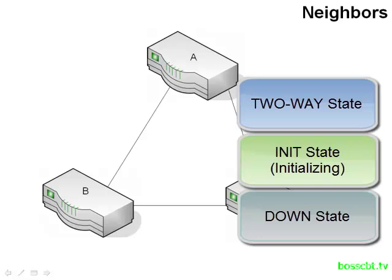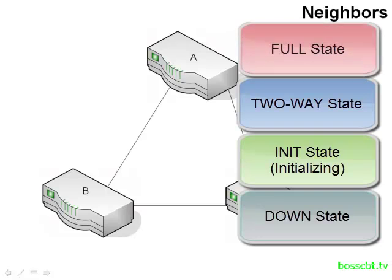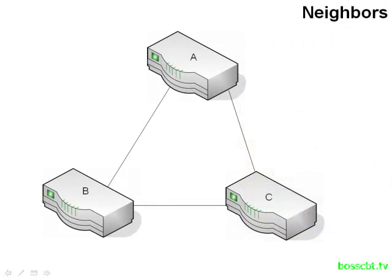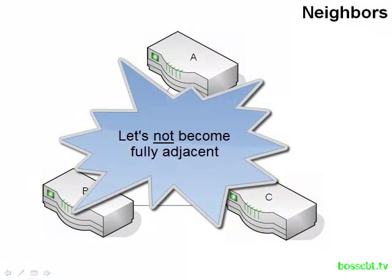At this point, the routers are ready to go into one of two directions. They can decide to exchange topology information — the link state advertisements — and if they go through that process successfully, they'll eventually become full neighbors or fully adjacent to each other. The other option is they cannot become full neighbors; instead, they elect a different router on the network to which all routers will become fully adjacent, leaving other neighbors in the two-way state. That might seem confusing, so let's dig into that a little bit more.